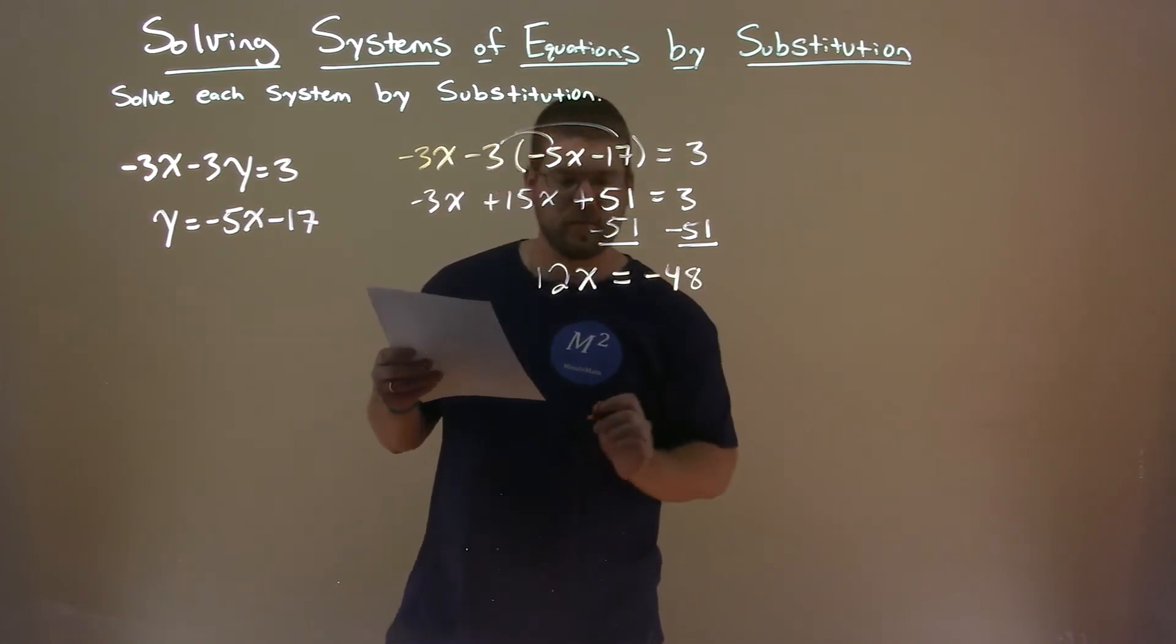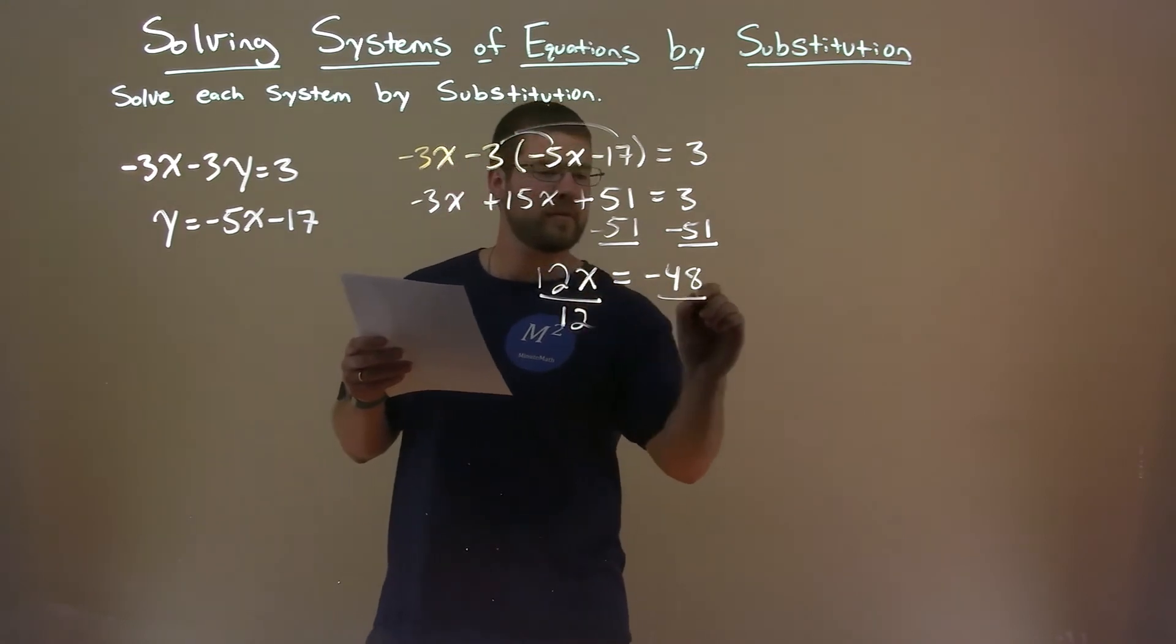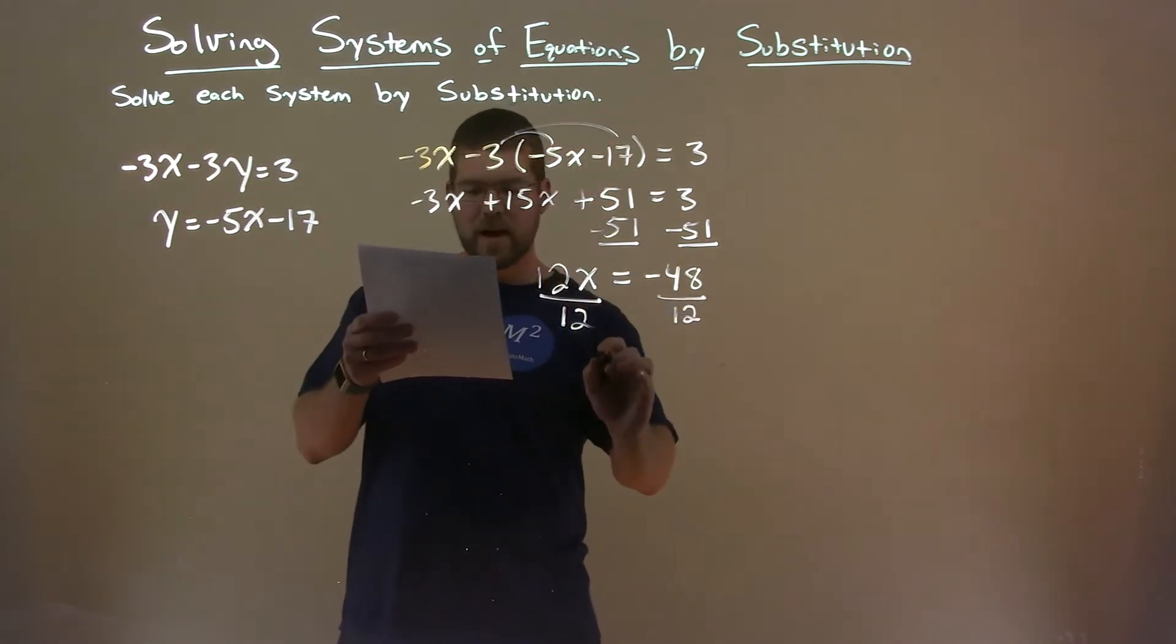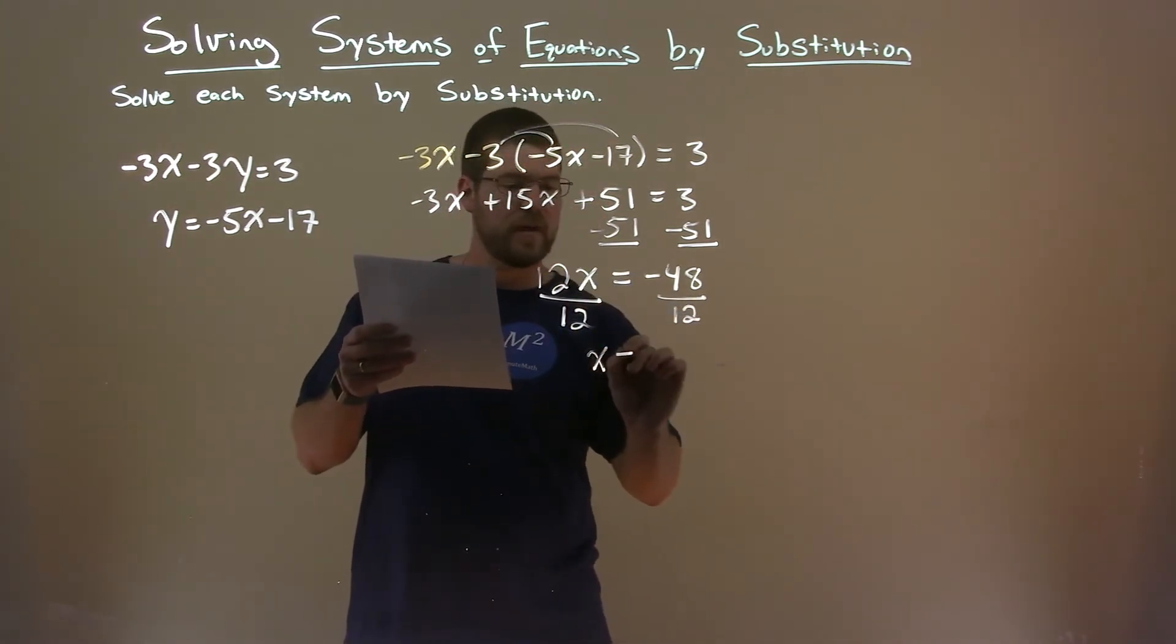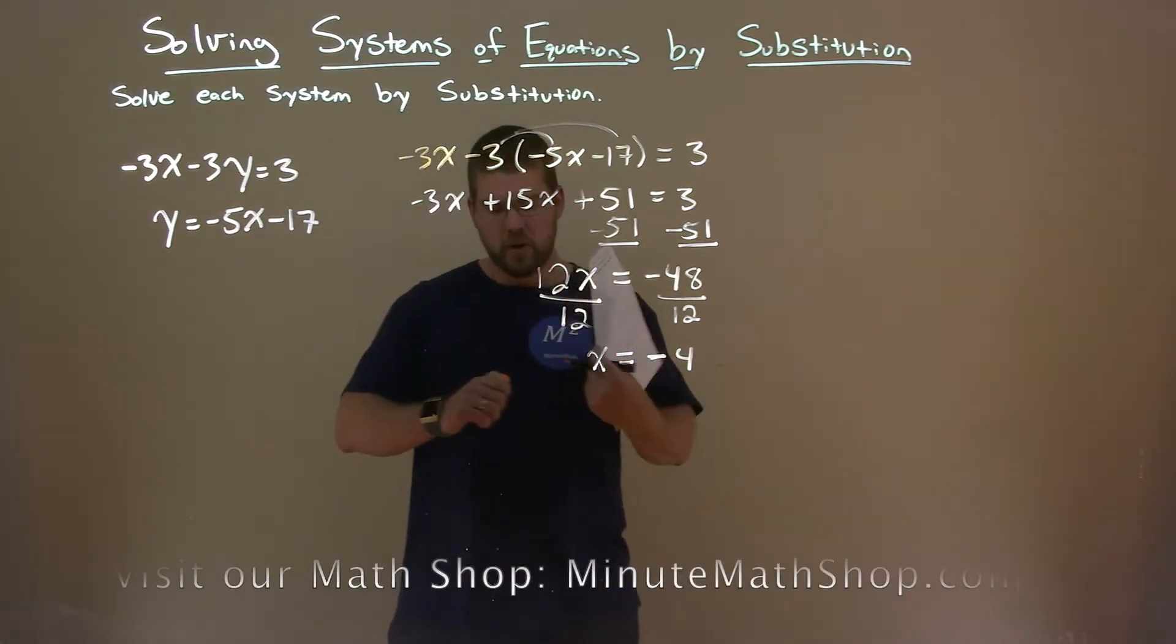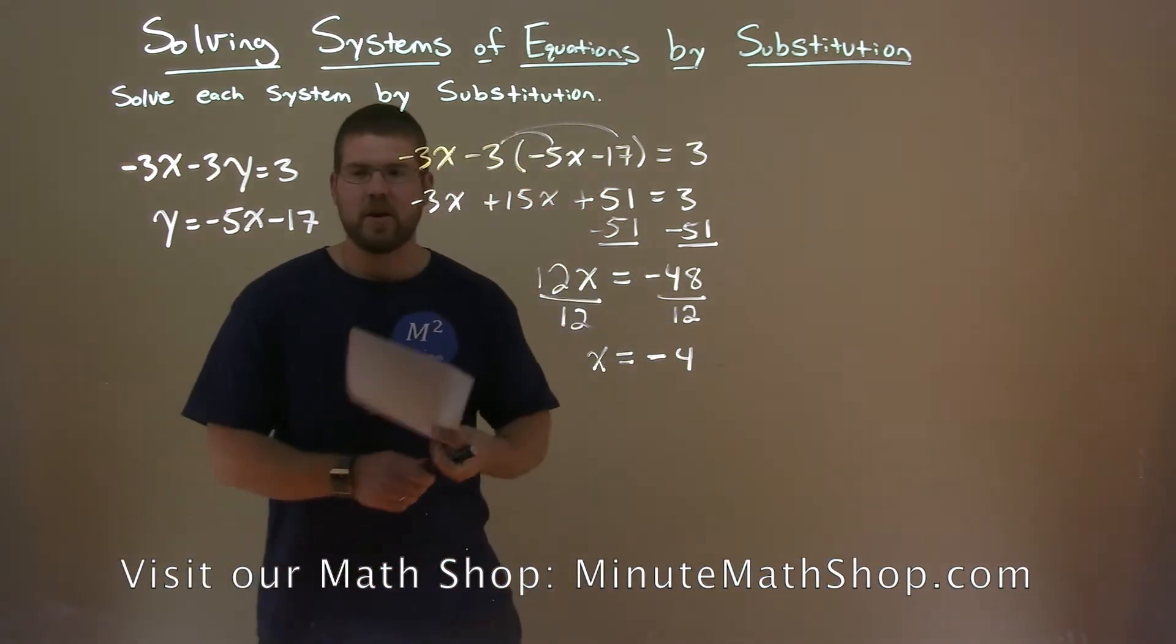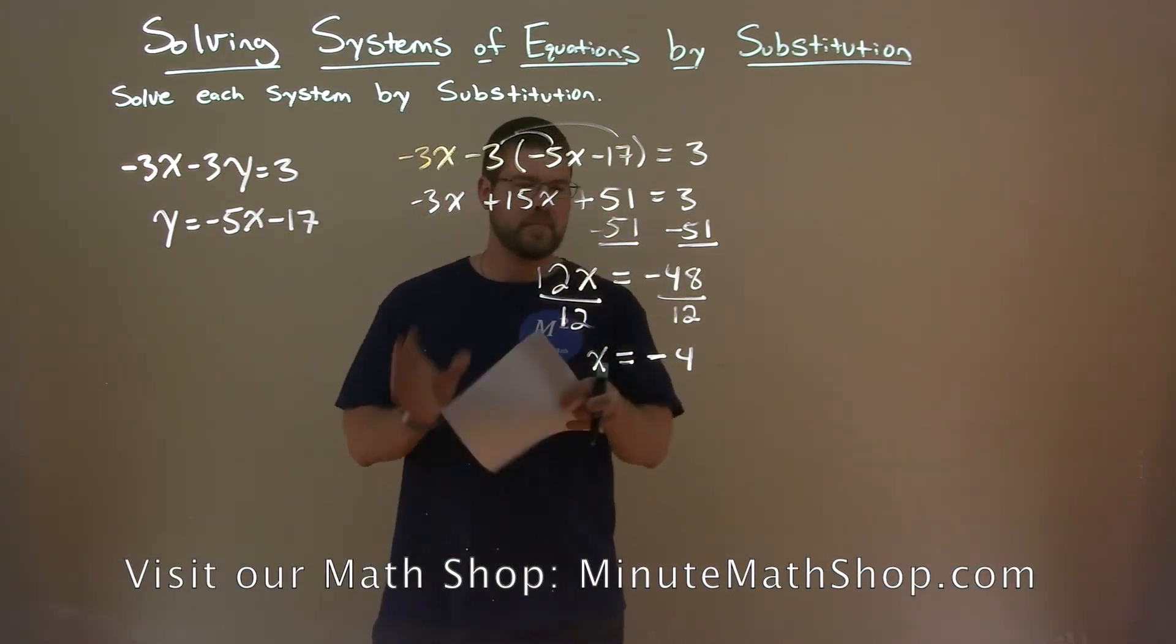This marker is dying. I'll switch in a second. Divide both sides by 12. And we have x completely by itself, and that equals a minus 4. All right, let's get a new marker for the next part here. Let's go in blue. It works.